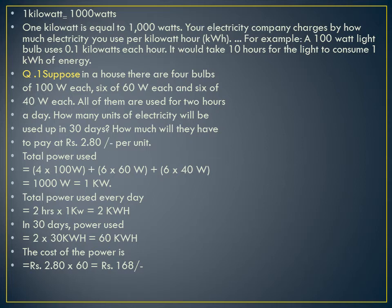Total power used every day is 2 hours × 1 kilowatt = 2 kilowatt hours. In 30 days, power used is 2 × 30 = 60 kilowatt hours. The cost of the power is rupees 2.80 per unit × 60 units = rupees 168.